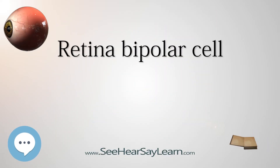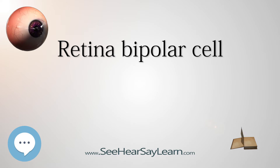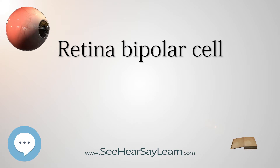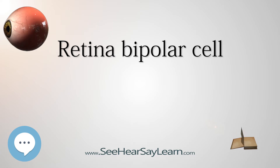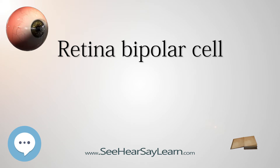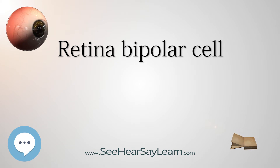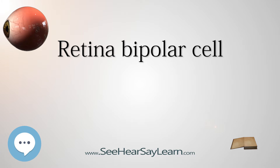As a part of the retina, bipolar cells exist between photoreceptors — rod cells and cone cells — and ganglion cells. They act, directly or indirectly, to transmit signals from the photoreceptors to the ganglion cells.